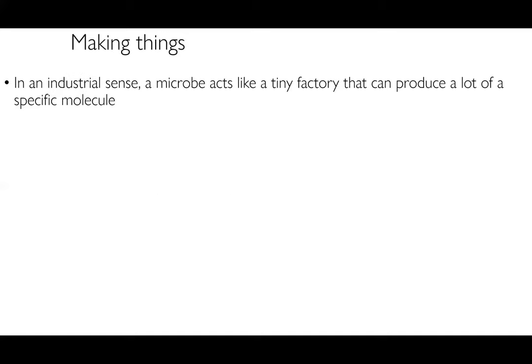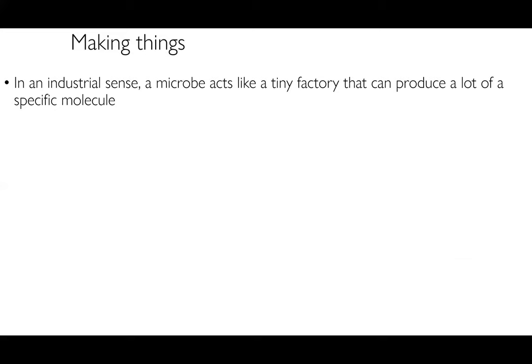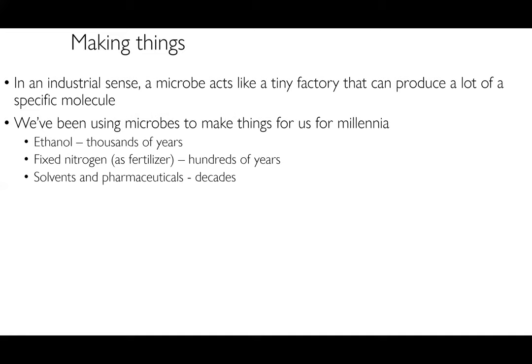When thinking about making things with microbes, they act essentially like a tiny factory, producing a lot of a specific molecule. Microbes are basically black boxes — stuff comes in, stuff comes out, a bunch of stuff happens in between. They're metabolism machines, and we can take advantage of their metabolism and genetics to make very specific molecules. We've been using microbes to do this for millennia: ethanol fermentation for potentially tens of thousands of years, nitrogen fixation for hundreds of years, and solvents and pharmaceuticals for the past few decades.